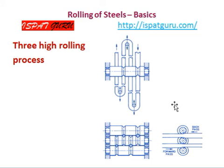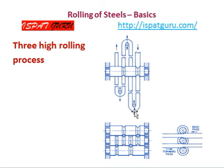This shows a three-high mill with top roll, middle roll, and bottom roll. Pass number one, pass number two, pass number three, and pass number four are shown. After each pass the bar is reversed to go back into the rolling mill, and this reversal takes place in a three-high mill.